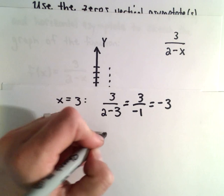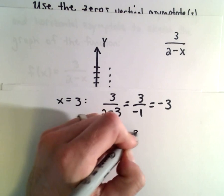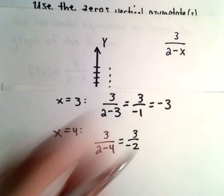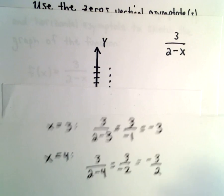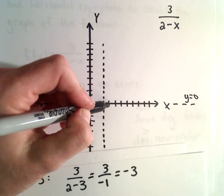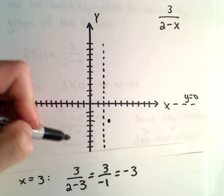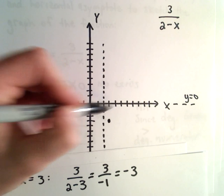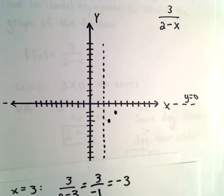x equals 4, that'll give us 3 over 2 minus 4, which will be 3 over negative 2 or negative 3 halves. So I'm going to put those values in there. So at positive 3, we get negative 3. And at x equals 4, we're at negative 3 halves. That's 1 and a half, so somewhere right there.